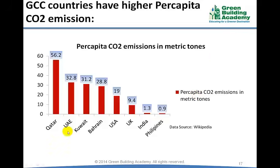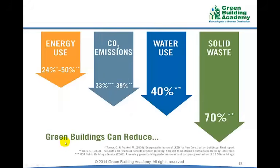The per capita CO2 emission is higher in GCC countries compared to developed countries like USA or UK, or developing countries like India and Philippines. Per capita CO2 emission is the CO2 emission divided by mid-year population of the country. The reasons can be: Number 1, climate — GCC countries have extremely hot and humid conditions requiring cooling and dehumidification, which is energy intensive. Number 2, lack of public transportation. Number 3, generally higher per capita income. Green buildings can be the solution for all major environmental issues.